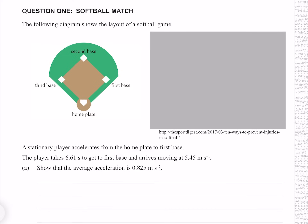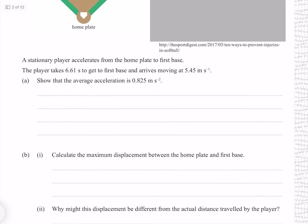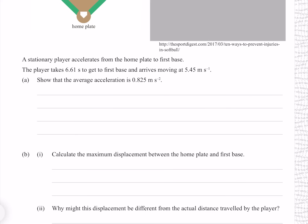The following diagram shows the layout of a softball game. A stationary player accelerates from home plate to first base. The player takes 6.61 seconds to get to first base and arrives moving at 5.45 meters per second. Show that the average acceleration is 0.825 meters per second per second.